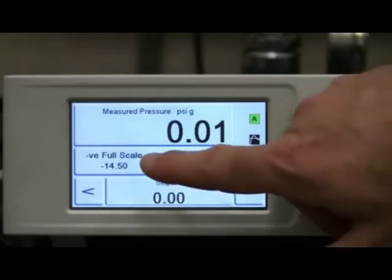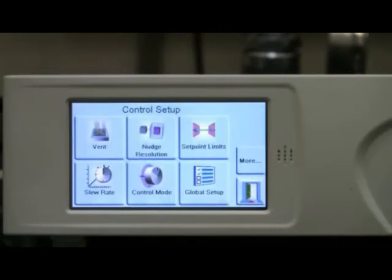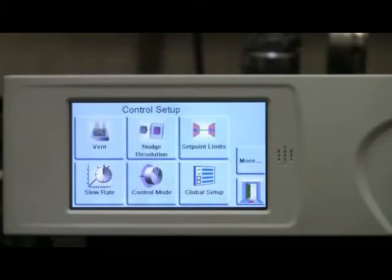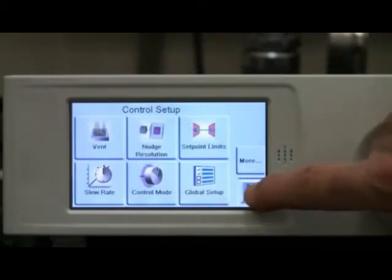The center section is the Control Setup menu. Here, we can vent the test port to atmosphere, select the nudge resolution, change the high and low set point limits which help protect the device under test, select the Control Speed parameters, and also access the Global Setup menu.